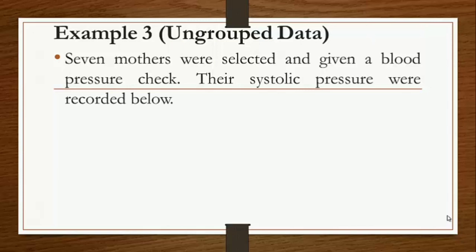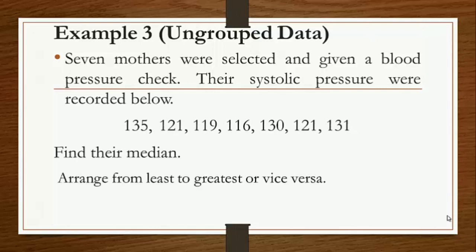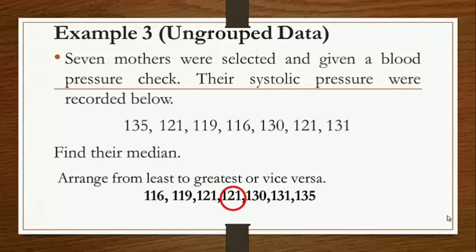For example, seven mothers were selected and given a blood pressure check. Their systolic pressures were recorded. To find their median, we arrange the values from least to greatest. The middlemost value falls on 121. Therefore, the median is 121.